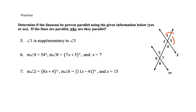Welcome back. Angles 1 and 3: yes, they are supplementary and they are a linear pair, but they cannot prove parallel lines because they both are on the same line. So that is a no.